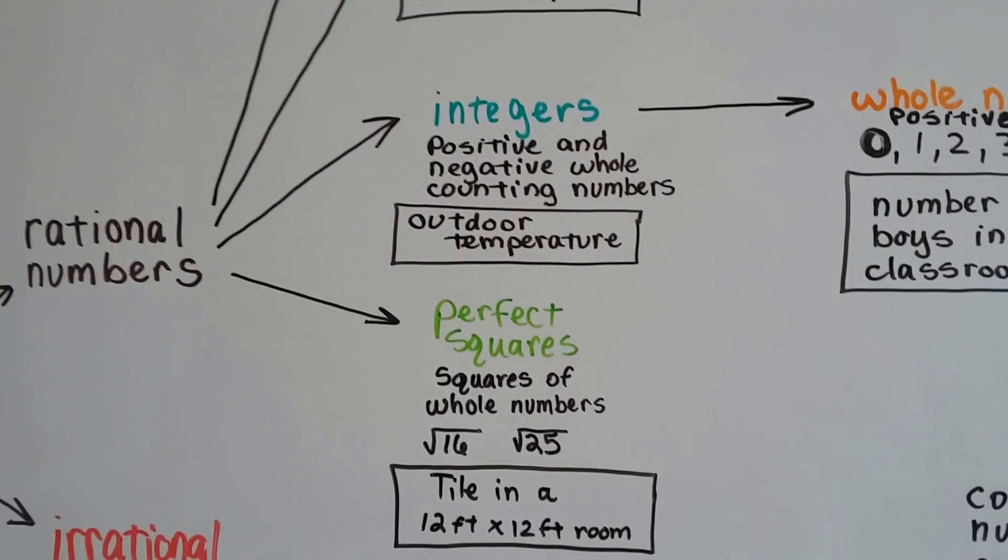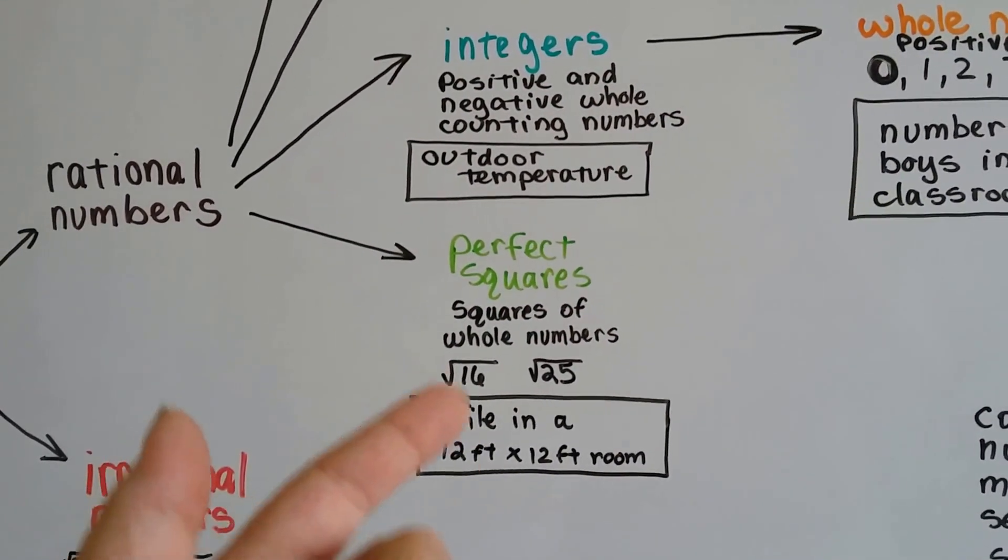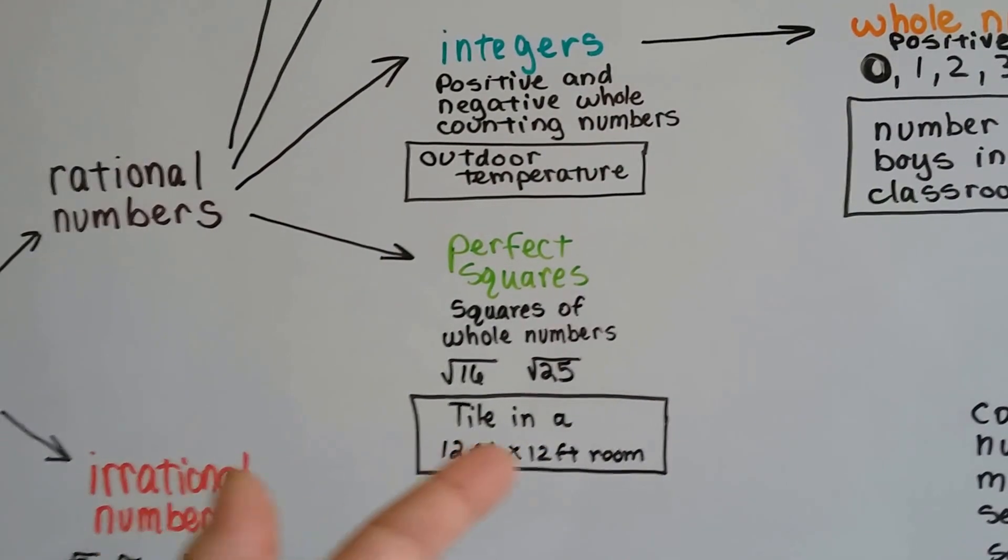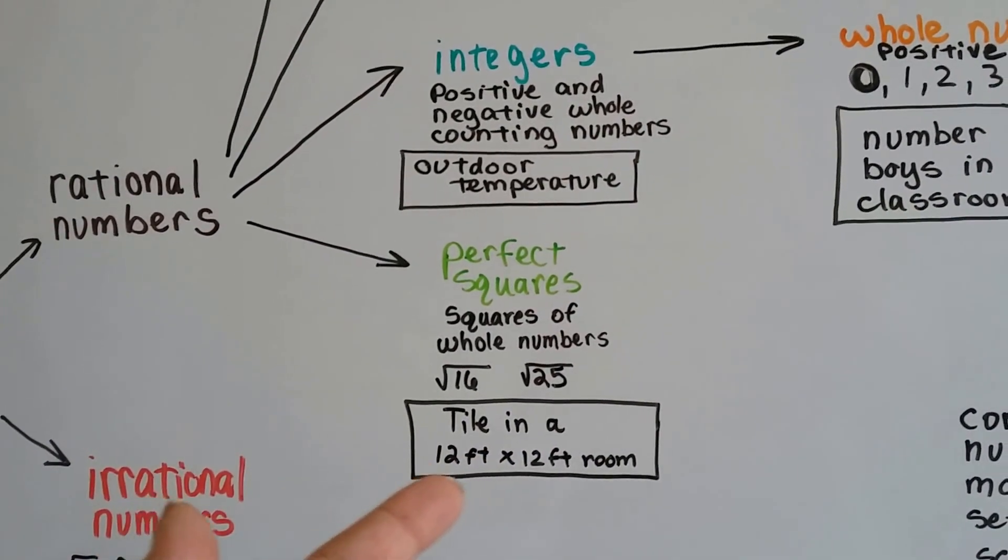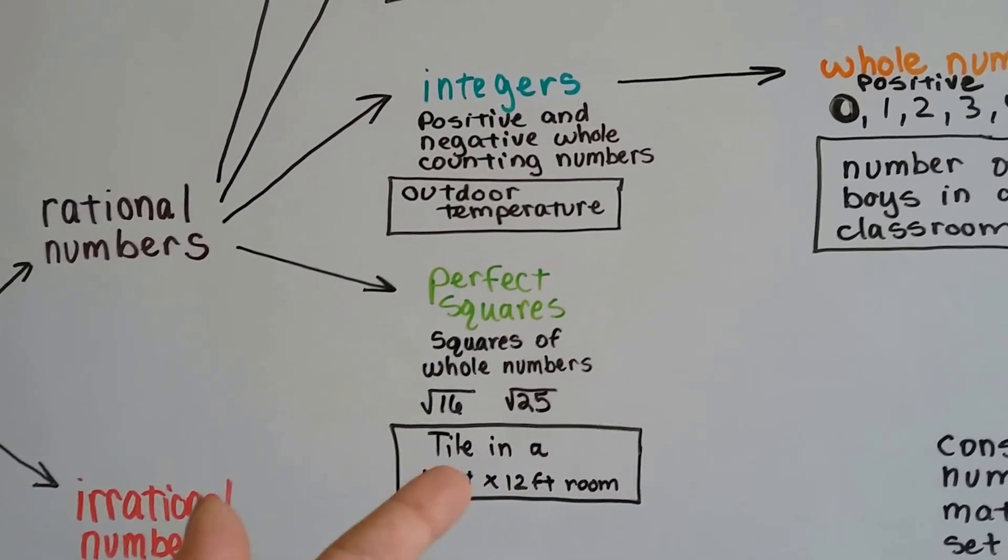Perfect squares, well, that would be like tiling a 12 foot by 12 foot room. And 12 by 12 would be 144. The square root of 144 is 12. It's a perfect square. Nice whole numbers.